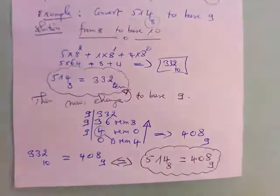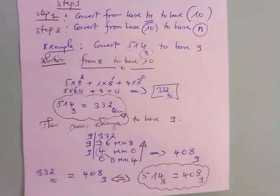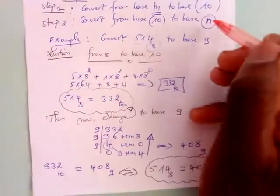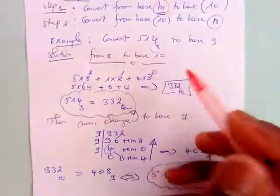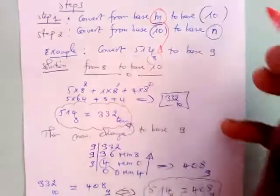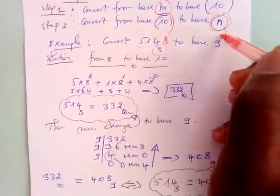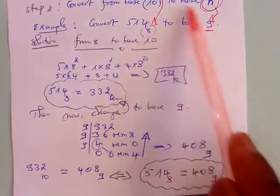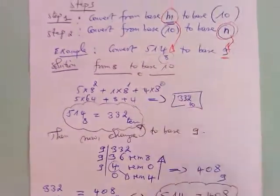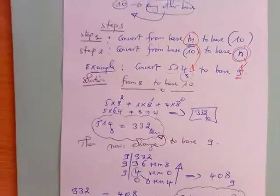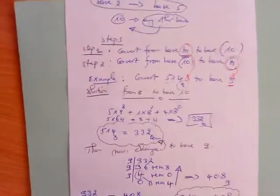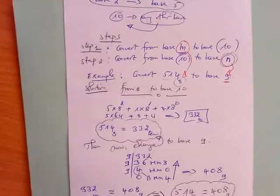This is the way of changing from base M to base N. We have considered base M here is base 8 and base N is base 9. Moving from base M to base N. So, this is the way we do it, changing any number in base M and change it to base N.